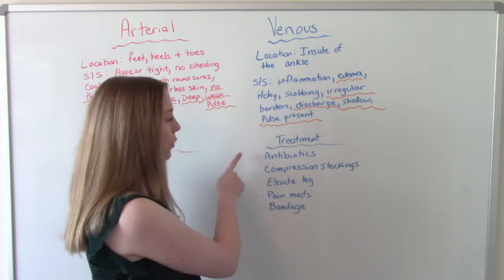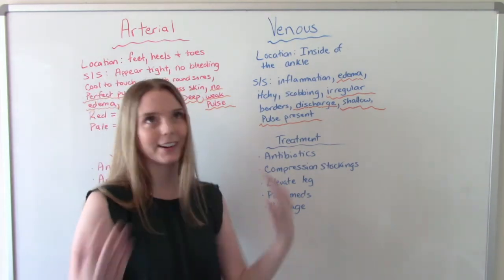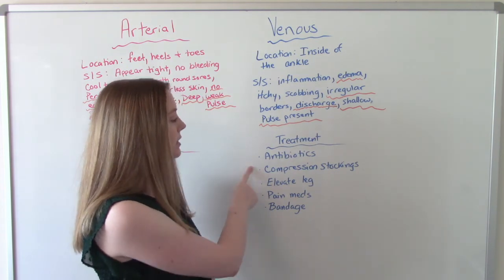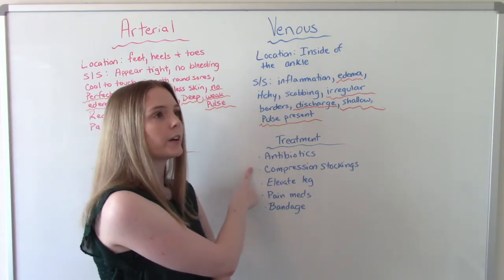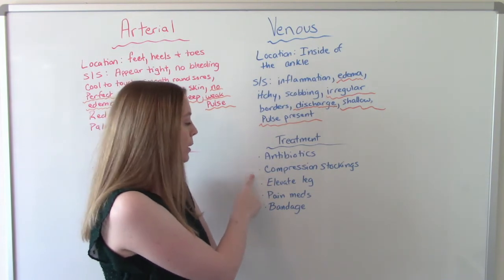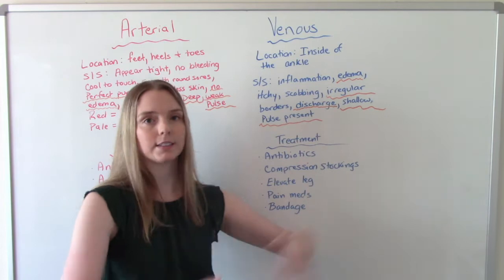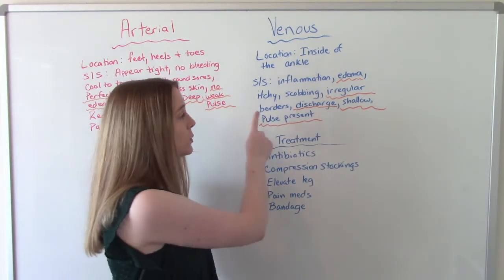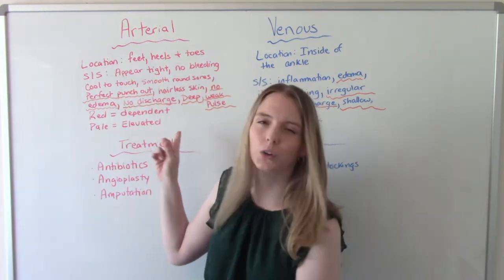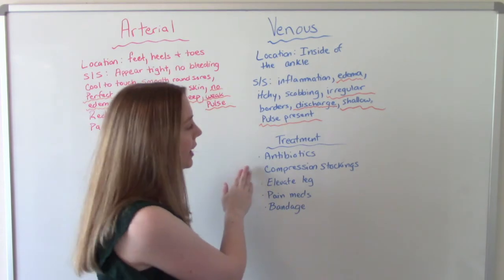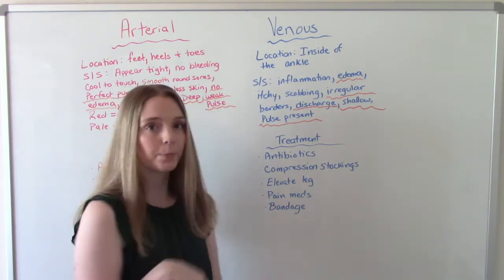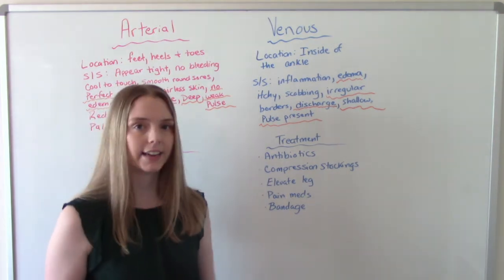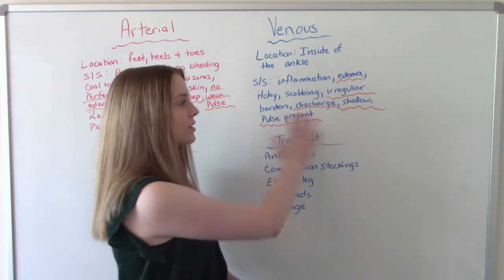Treatment for venous ulcers includes antibiotics to prevent infection, compression stockings — such as SCDs or TED hose — and elevating the legs. The purpose of these is to help increase blood flow to the area. Pain medications may also be given, since venous ulcers tend to be more painful, whereas patients with arterial ulcers usually don't report much pain. Proper bandaging and wound care teaching are also important.